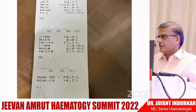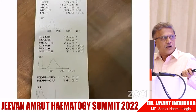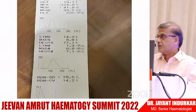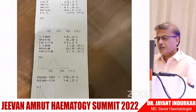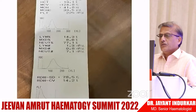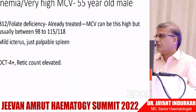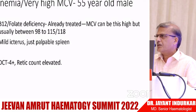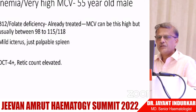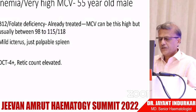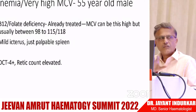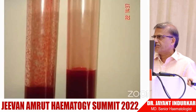Here is a simple case: looking at a three-part differential histogram, there is anemia and very high MCV. As we just heard, high MCV can be B12 deficiency or anything else. This person had already received B12. In day-to-day experience with megaloblastic anemia, the MCV is usually 98 to 115; it can be higher. This patient had a just-palpable spleen and mild icterus.